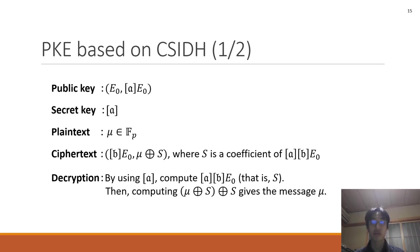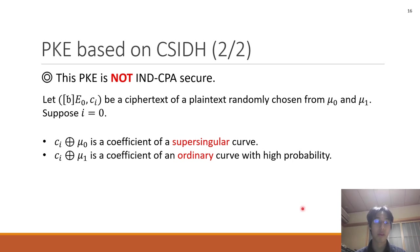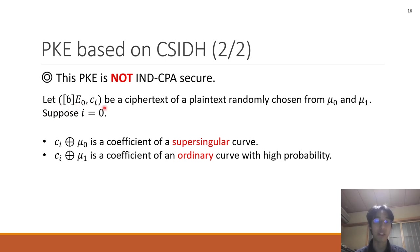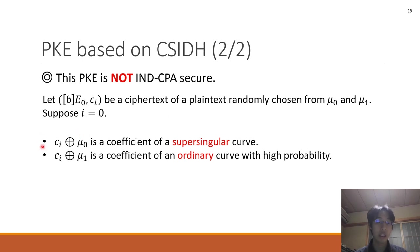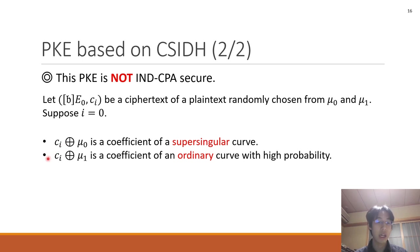This PKE is not IND-CPA secure. I explain the reason. Let B*E0 and c_i be the ciphertext of the plaintext randomly chosen from μ_0 and μ_1, and suppose i equals 0. Then c_i XOR μ_0 is a j-invariant of a supersingular elliptic curve — it is a j-invariant of some E0. And c_i XOR μ_1 is a j-invariant of an ordinary elliptic curve with high probability.